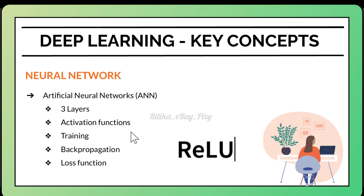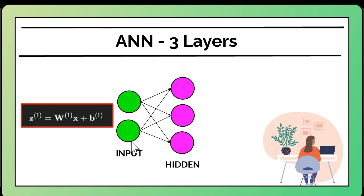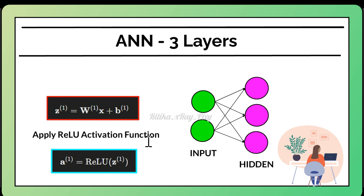We have two input features: x1 for size and x2 for number of bedrooms. The weights from the input layer to the hidden layer are denoted as w and the bias as b. We calculate the output of the hidden layer neuron using the weighted sum of inputs plus bias, then apply the ReLU activation function to get the hidden layer neuron output.